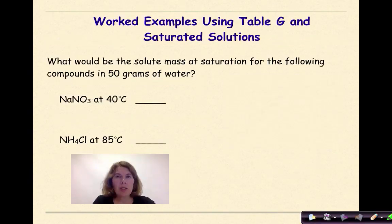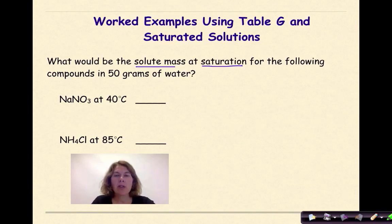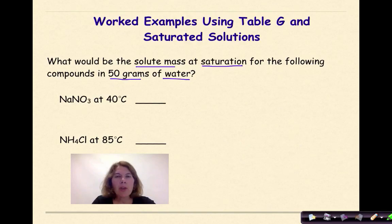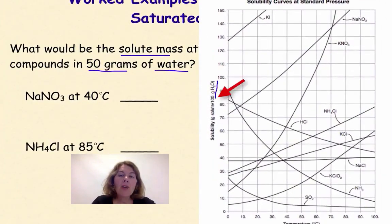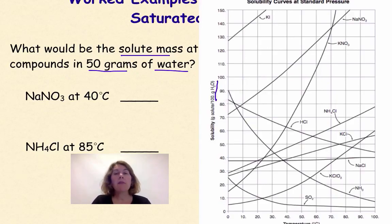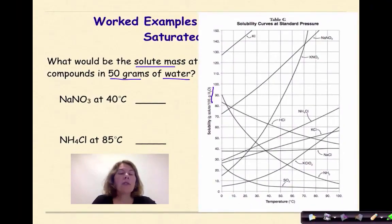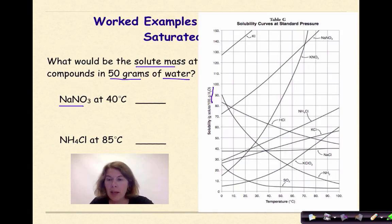Now we're going to change the situation a little bit. The question here asks: what would be the solute mass at saturation — hitting the line — for the following compounds in 50 grams of water? Now remember, if you look at Table G, you can see that this is in 100 grams of water, not 50 grams of water. So the first compound we're going to look at is sodium nitrate. Let's go find that line.